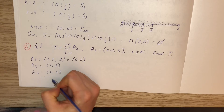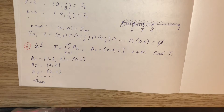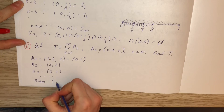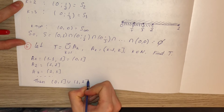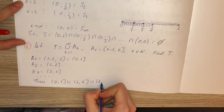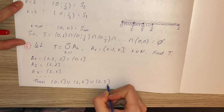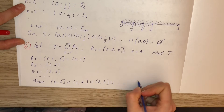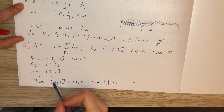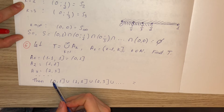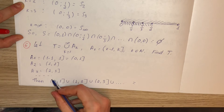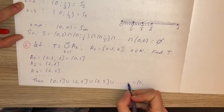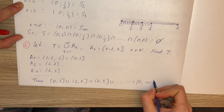The union becomes (0,1] ∪ (1,2] ∪ (2,3] ∪ ··· . In the final result, we just look at the endpoints. The left endpoint 0 is not included, and the right endpoint goes to infinity. So T = (0, ∞).